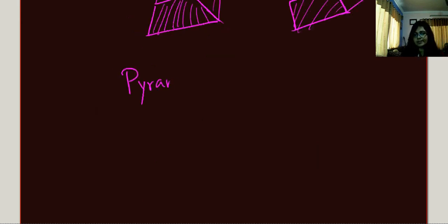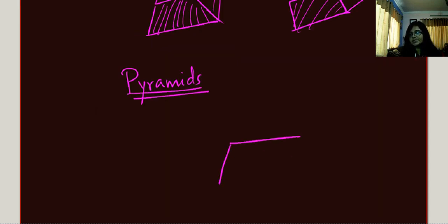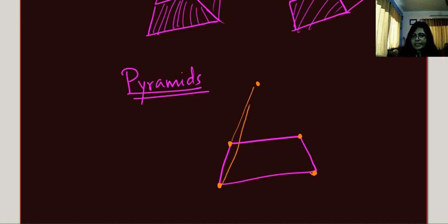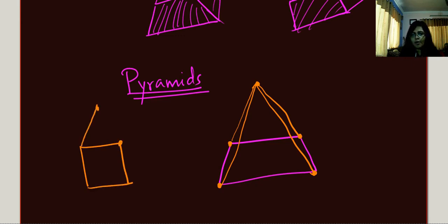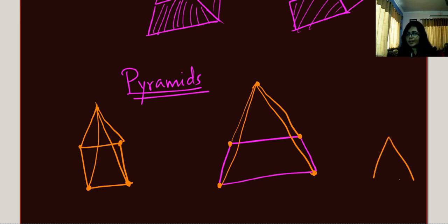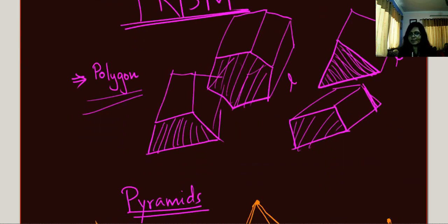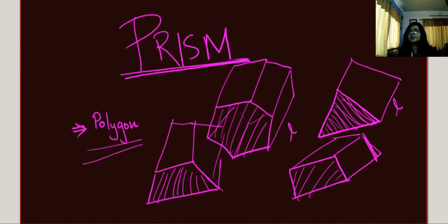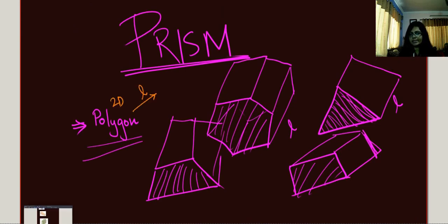What about pyramids? For pyramids, we take the same two-dimensional polygon, but this time we won't extend it to a length L. Instead, we take all the vertices of this two-dimensional polygon and join them to an external point — then we will get a pyramid. For example, if you take a square base and join all the vertices to an external point with a straight line, you get a pyramid. For a triangular pyramid, take an external point and join all the vertices to that point. So today in this video we will discuss how to find the volume of a prism and pyramid.